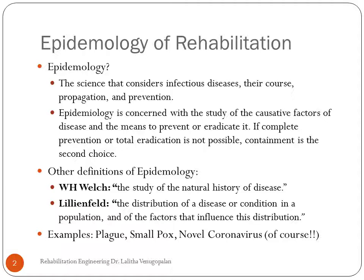An infectious disease can be anything. Over the years, ever since human evolution, we've had a number of diseases that are epidemics — starting from smallpox, plague, and measles. Measles was an epidemic itself. This study considers infectious diseases that can spread very easily, and their course of propagation.